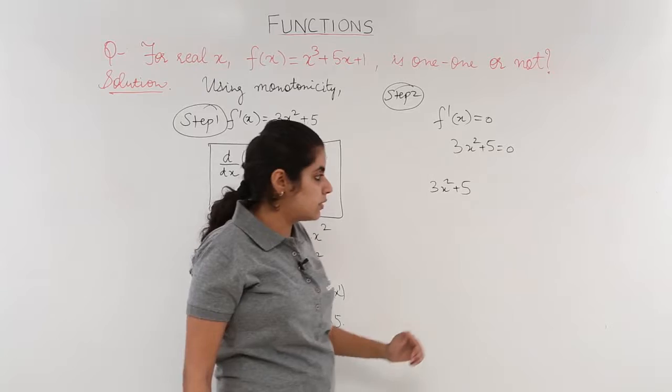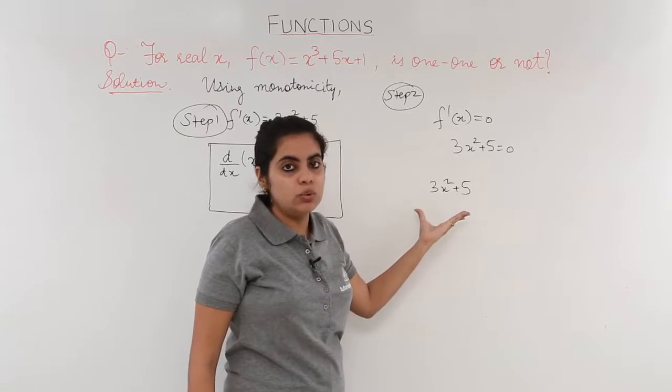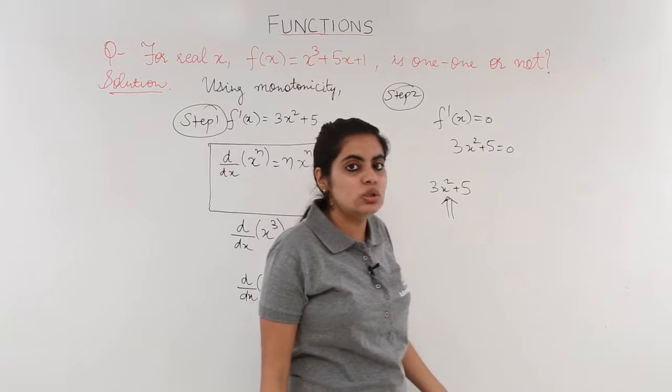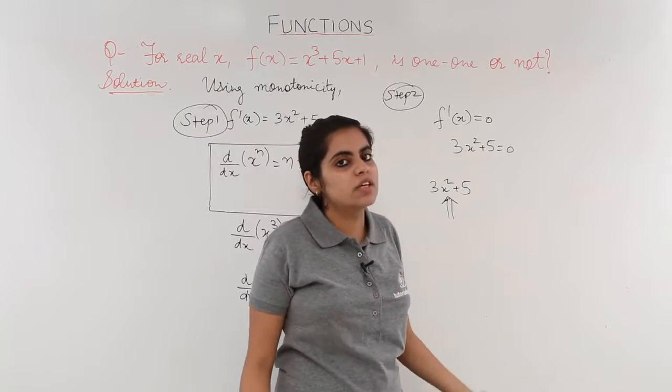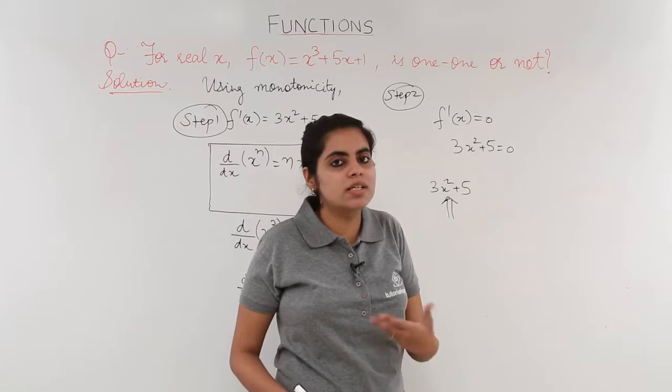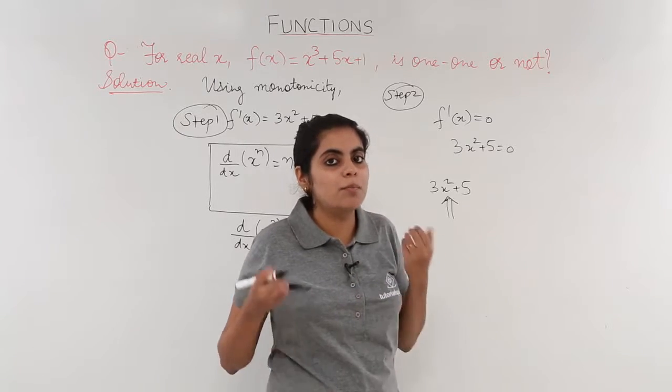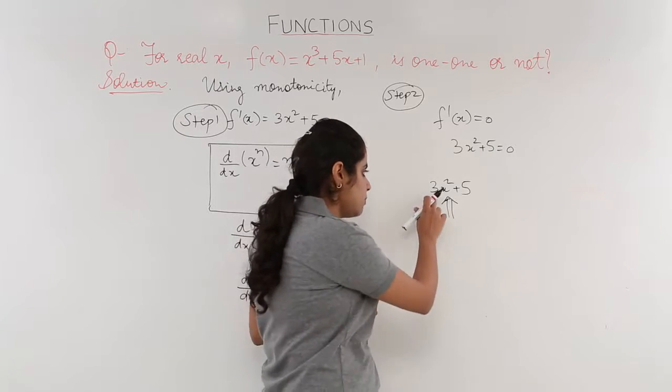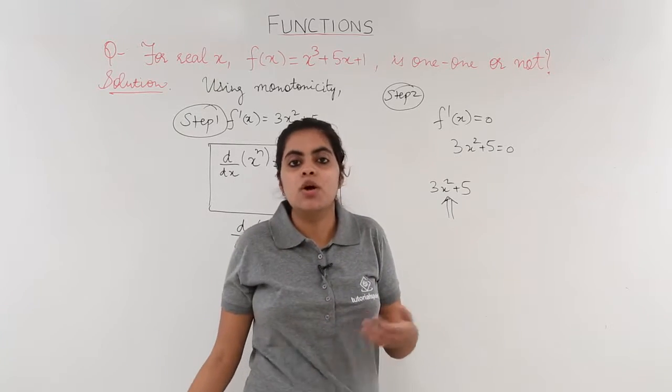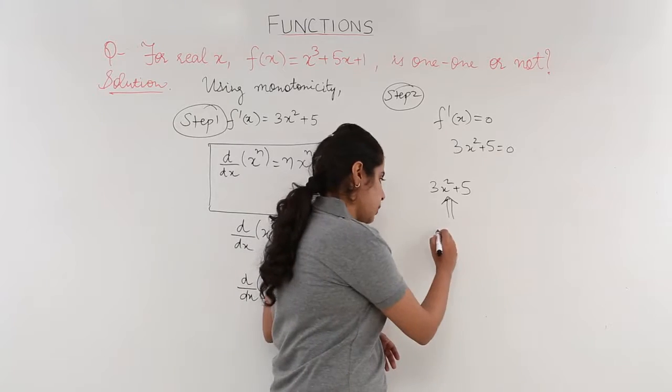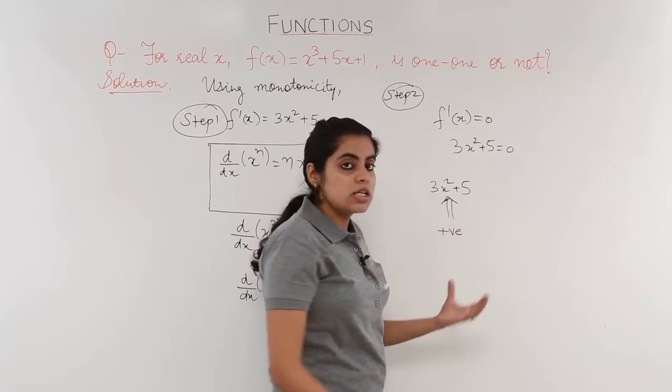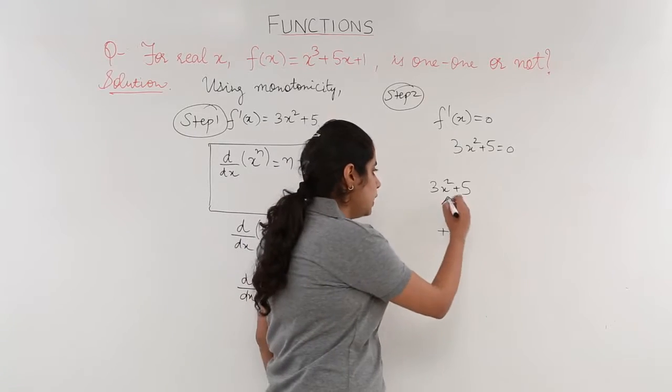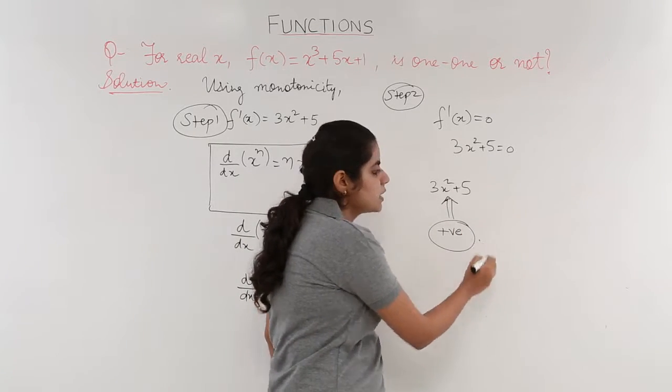So if it is real, any value having the square of that value, say x², will always give me positive. 0² is 0, 1² is 1, -2² is 4. Any number square is always positive. Positive multiply by 3 is again positive. So positive result plus 5 is again positive. So in all, this result is always positive.